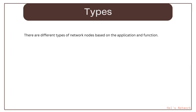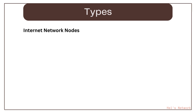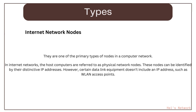We are just going to talk about four of them: internet network nodes, end nodes, distributed network nodes, and data communication nodes. Internet network nodes are one of the primary types of nodes in a computer network.